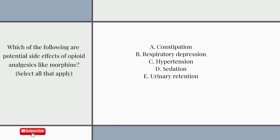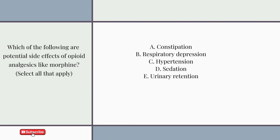Which of the following are potential side effects of opioid analgesics like morphine? Select all that apply. A. Constipation. B. Respiratory depression. C. Hypertension. D. Sedation. E. Urinary retention.